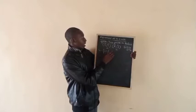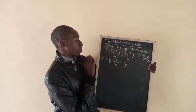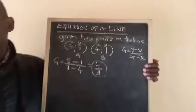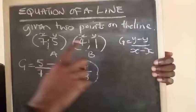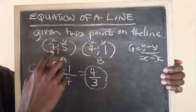We get the gradient, which is 5 minus 1 over 7 minus 4. 5 minus 1 is 4, 7 minus 4 is 3. So our gradient is 4 over 3.